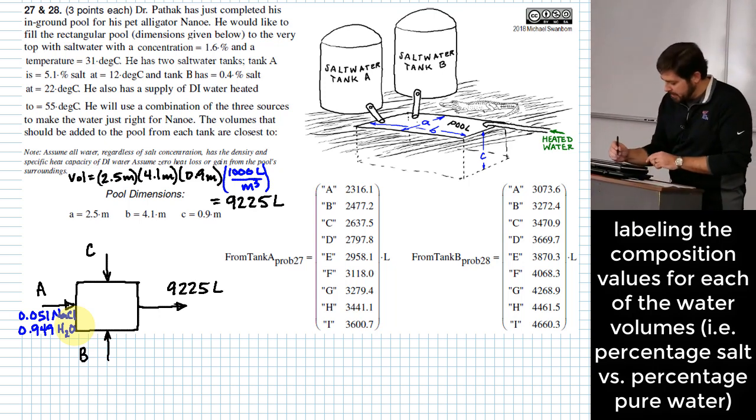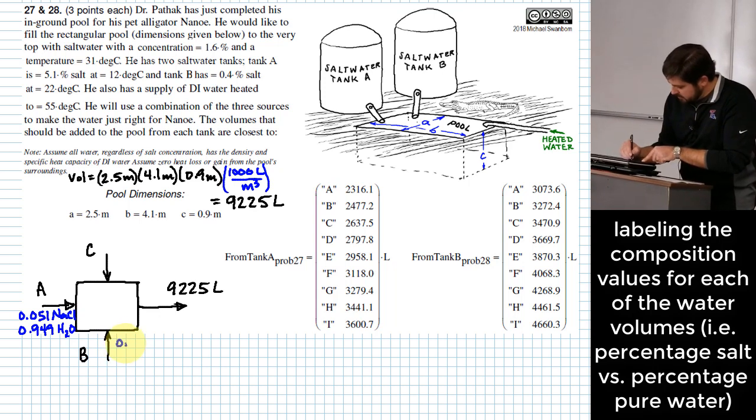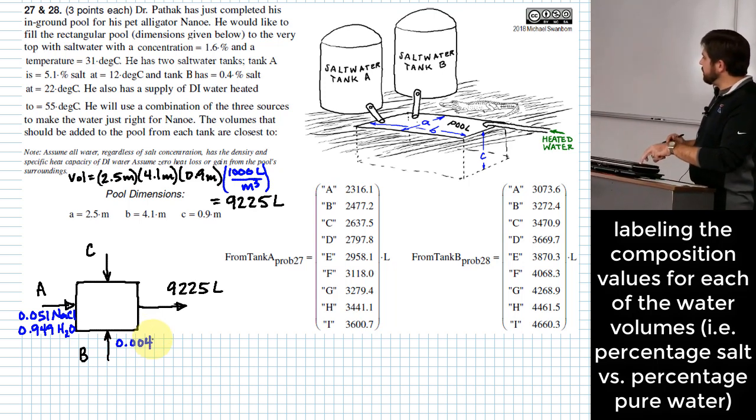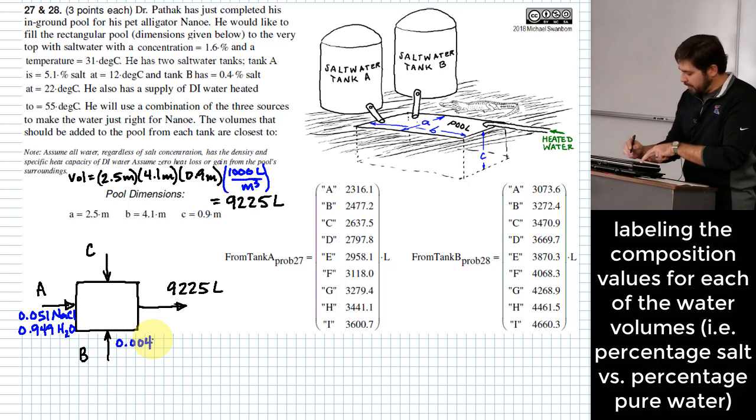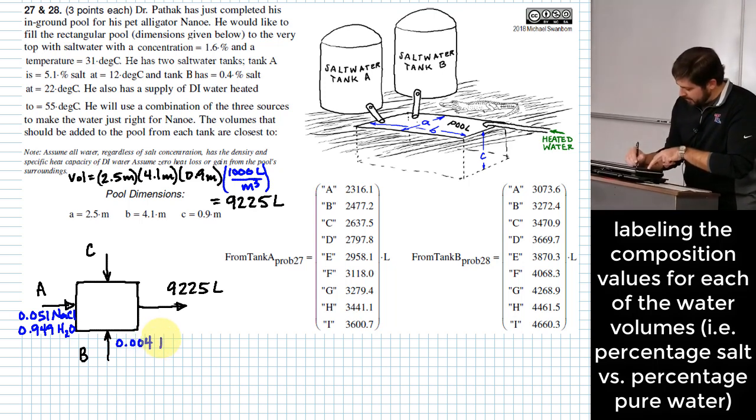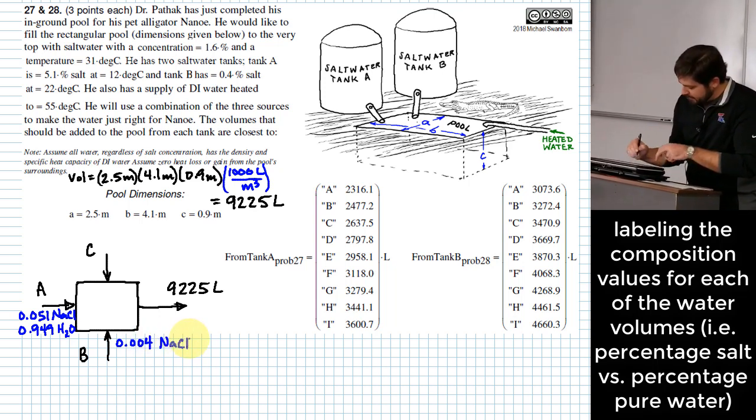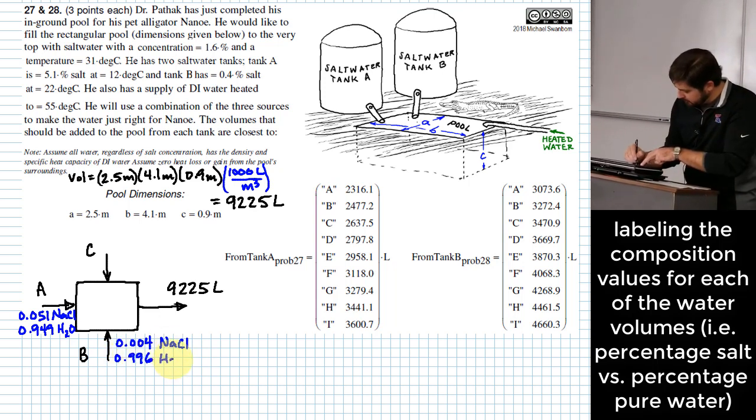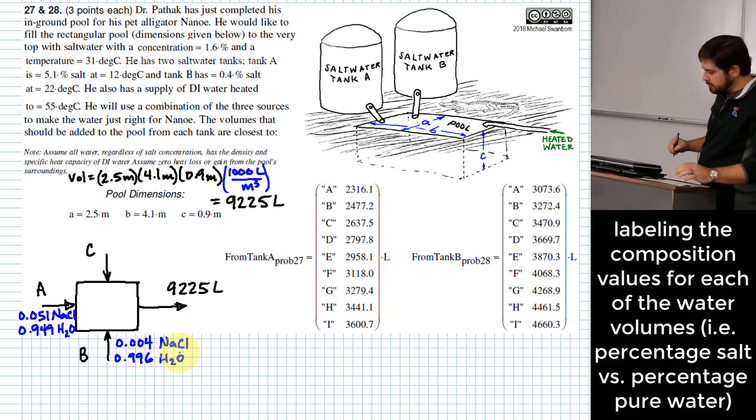Is there anything else besides water in it? None is really indicated in the problem. So we're going to pretend like there's nothing else besides just the salt and the water. So what does that leave us in terms of water? 0.949 as a decimal indicating the composition of water in that flow. What about B? Tank B?